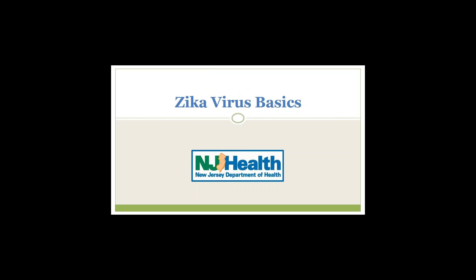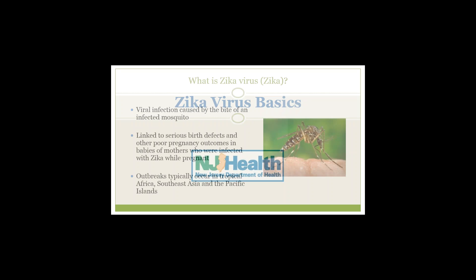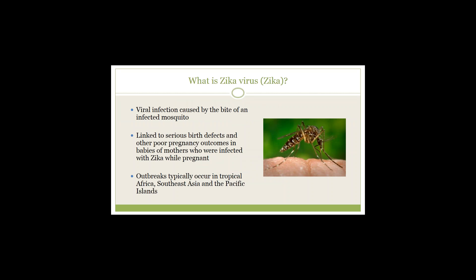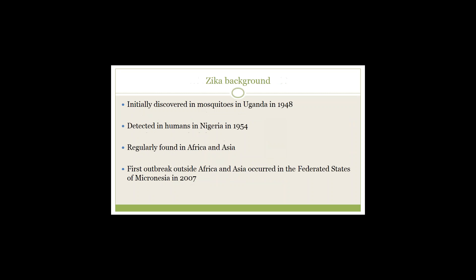Prior to 2015, Zika virus outbreaks have occurred in areas of Africa, Southeast Asia, and the Pacific Islands. Zika is not a new virus and was first discovered in mosquitoes in Zika Forest, Uganda in 1948. The virus was detected in humans in Nigeria in 1954.